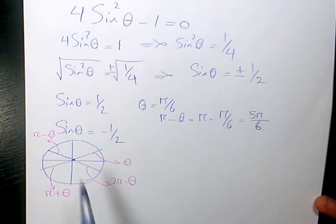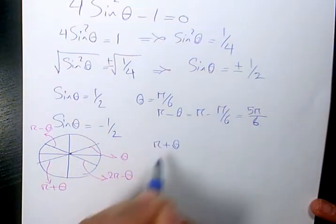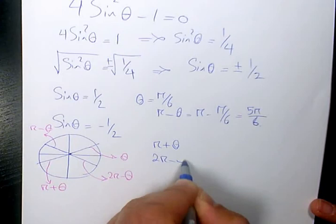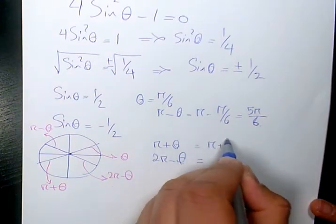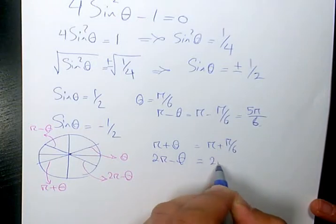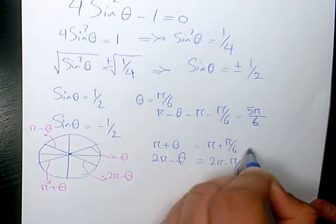Now for the second part, which is negative half, we're going to have pi plus theta and 2 pi minus theta. So pi plus pi over 6, and here we have 2 pi minus pi over 6.